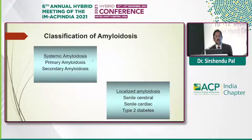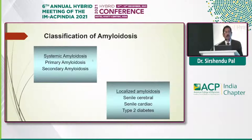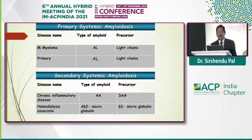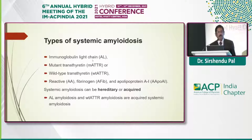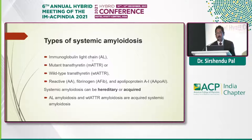Coming to classification: systemic amyloidosis is subclassified into primary and secondary, or the localized amyloidosis which may include senile cerebral, senile cardiac, or type 2 diabetes. Primary systemic AL amyloidosis is from multiple myeloma, composed of light chains. The AA type is very prevalent in India due to serum amyloid A protein, which leads to chronic inflammatory diseases. Also, beta-2 microglobulin in hemodialysis patients. Types include immunoglobulin light chain, mutant transthyretin, wild-type transthyretin, reactive, fibrinogen, and apolipoprotein A1. Systemic amyloidosis may be hereditary or acquired; AL amyloidosis and wild-type ATTR amyloidosis are acquired.